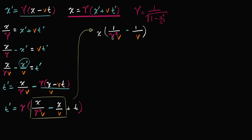If we want to subtract these two things it's nice to have a common denominator. So let's multiply the numerator and denominator of one over gamma squared v by gamma squared — so it becomes gamma squared over gamma squared. Now I'm going to focus on this part and hopefully this will simplify nicely. This is the same thing as one minus gamma squared, all over gamma squared v.